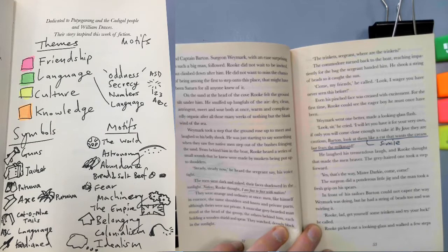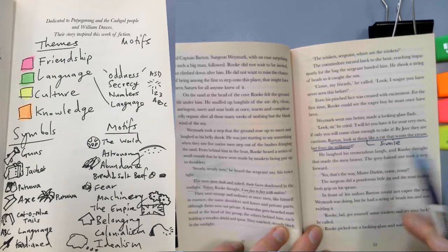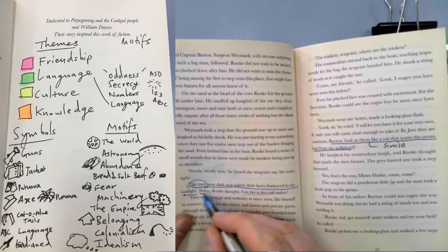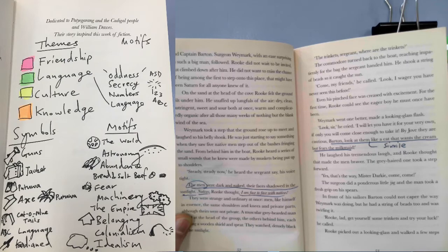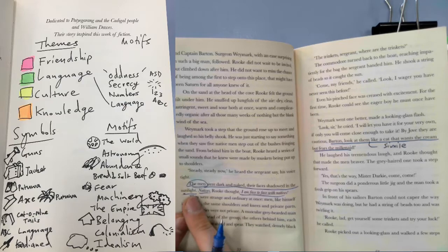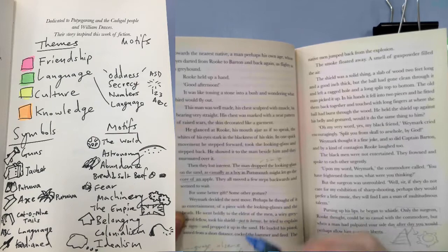So page 53, we've got a simile, Barton, look at them like a cat that wants the cream but fears the milk made. So that's a neat little simile again. Basically, we're having our first interaction on the beach, and the Indigenous men are a little bit unsure, a little bit curious, and a bit of a mixture of both. Page 52, the men were dark and naked. Their faces shadowed in the sunlight. Natives, Rook thought, I am face to face with natives. So the contrast between calling them men and then calling them natives. One is more humanising and one is less, so language is important there.